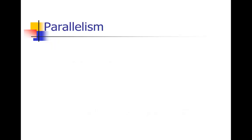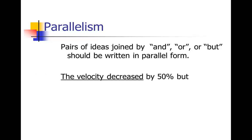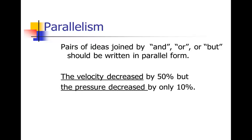Pairs of ideas and lists of things joined by 'and,' 'or,' or 'but' need to be written in parallel form. For example: 'The velocity decreased by 50%, but the pressure decreased by only 10%.' We've got subject-verb, subject-verb — those have to be written in the same form: subject-verb, but, subject-verb.